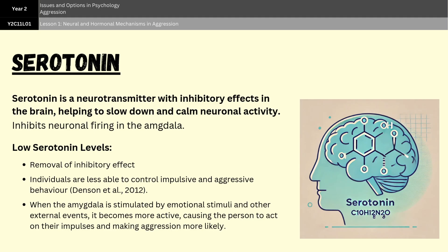Our second neural explanation for aggression is serotonin — or more importantly, serotonin deficiency. Serotonin is a neurotransmitter with widespread inhibitory effects in the brain; it's involved in helping to slow down and calm neuronal activity. Serotonin typically inhibits the firing of the amygdala, the part of the brain that controls fear, anger, and other emotional responses. Low levels of serotonin remove that inhibitory effect, with the consequence that individuals are less able to control impulsive and aggressive behavior — and that is known as the serotonin deficiency hypothesis. As a result, when the amygdala is stimulated by external events, it becomes more active, causing the person to act on their impulses and making aggression more likely.